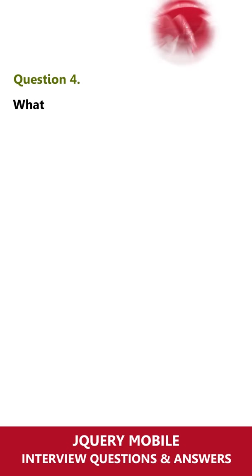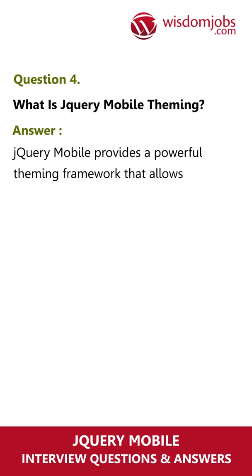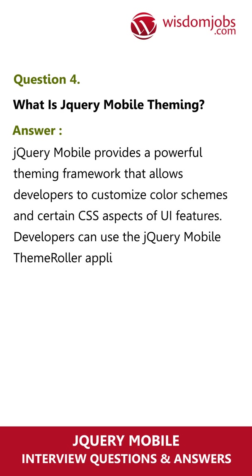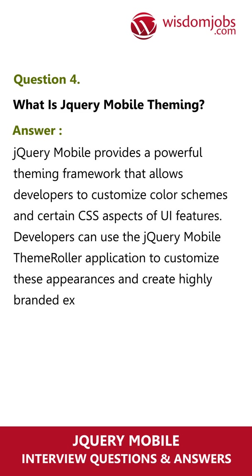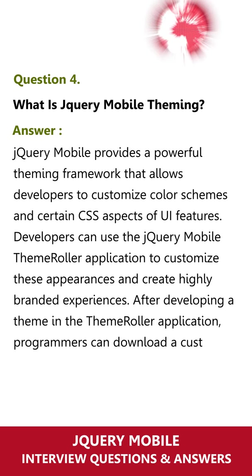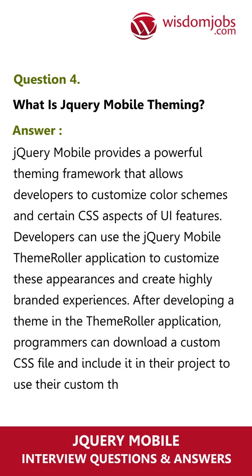Question 4. What is jQuery mobile theming? jQuery mobile provides a powerful theming framework that allows developers to customize color schemes and certain CSS aspects of UI features. Developers can use the jQuery mobile ThemeRoller application to customize these appearances and create highly branded experiences. After developing a theme in the ThemeRoller application, programmers can download a custom CSS file and include it in their project to use their custom theme.